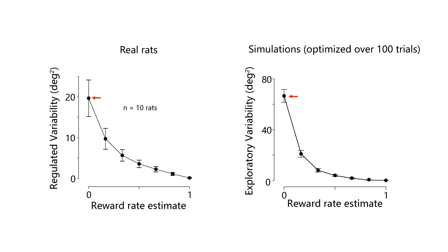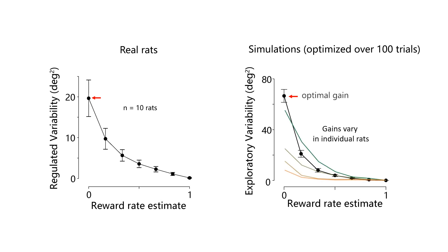However, the gain of the variability control function — which reflects the amount of exploratory variability you can regulate — was on average lower in our rats than in our simulations. While some rats had a near-optimal amount of variability, many had lower.